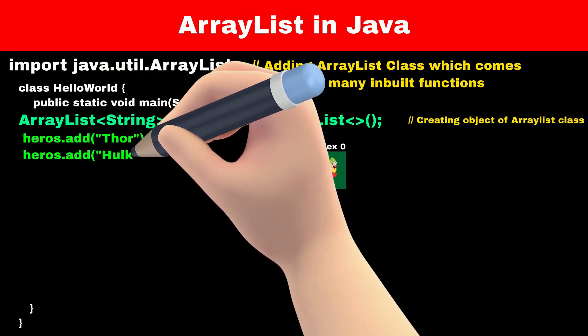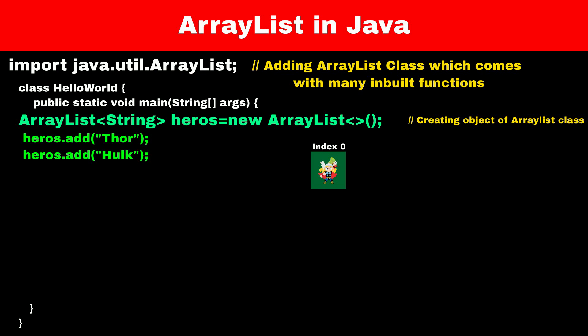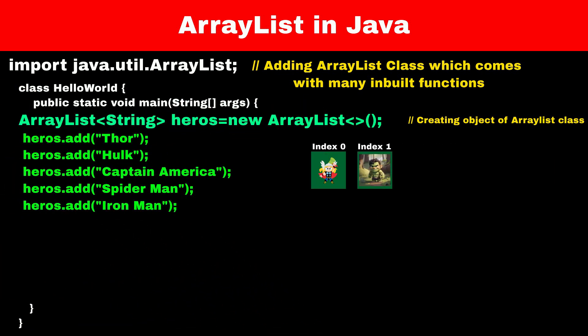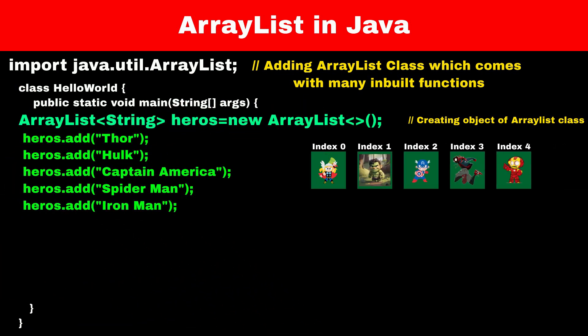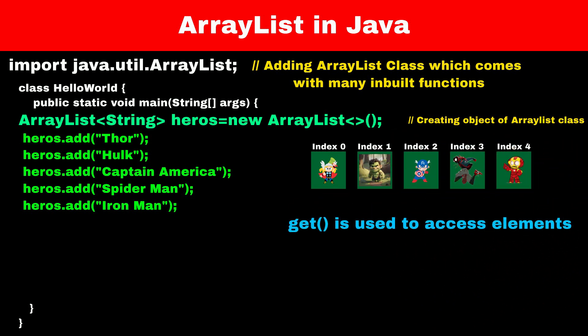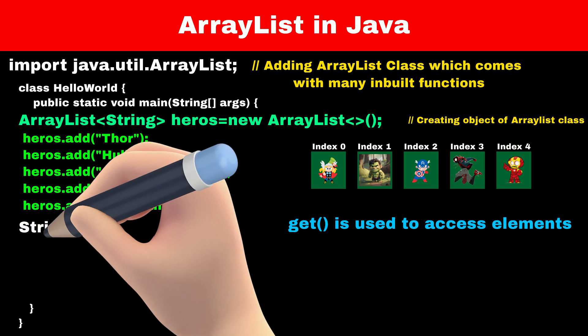Similarly, heroes.add("Hulk") will add Hulk into the ArrayList. We can continue adding elements to the ArrayList in this way. Just like finding heroes in a room, we can find items in the list by using their position. To access an element at any position in the ArrayList, we can use the get() method. But remember, the counting starts from 0.